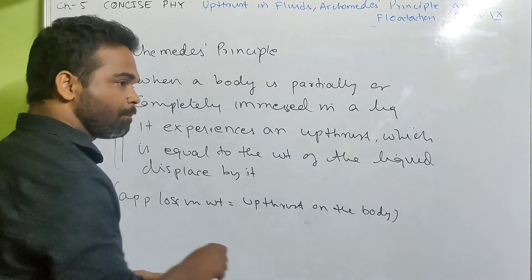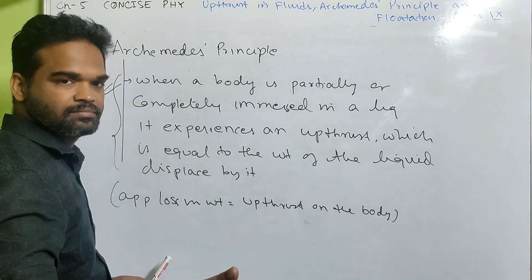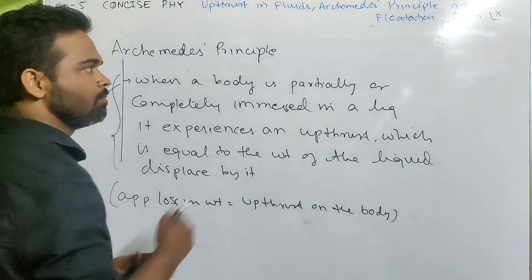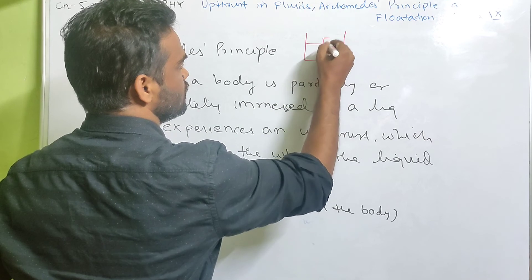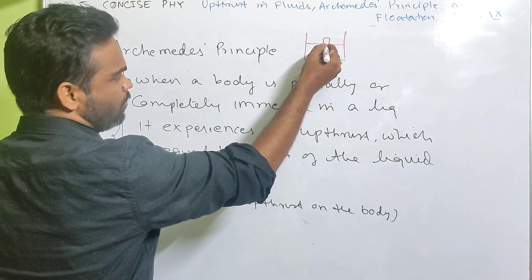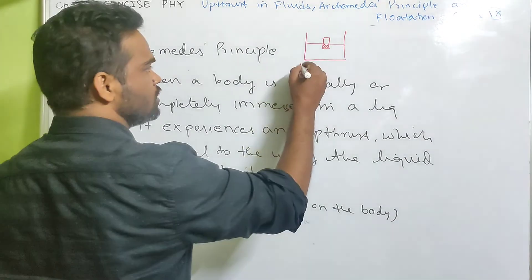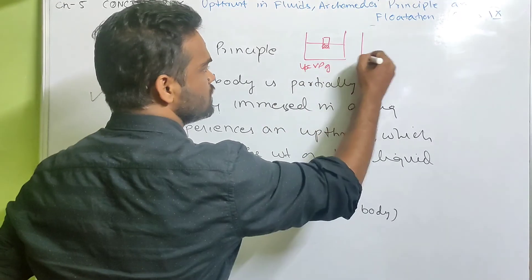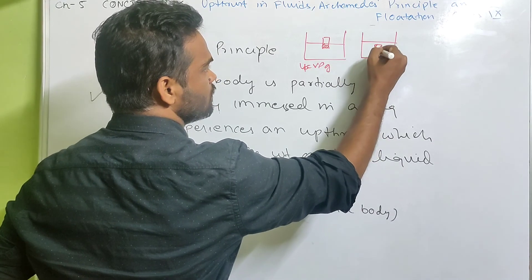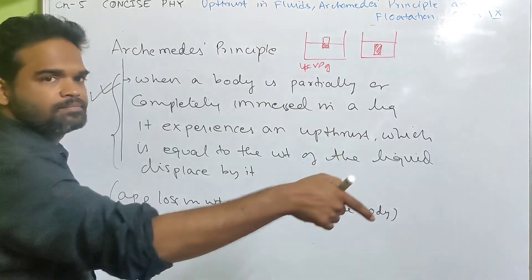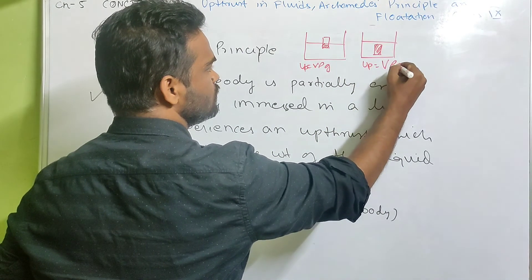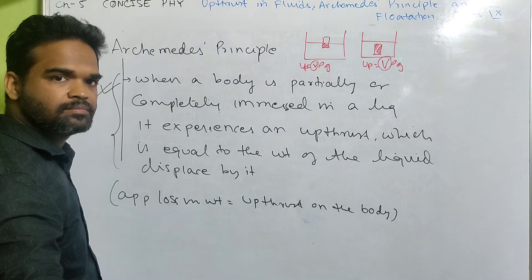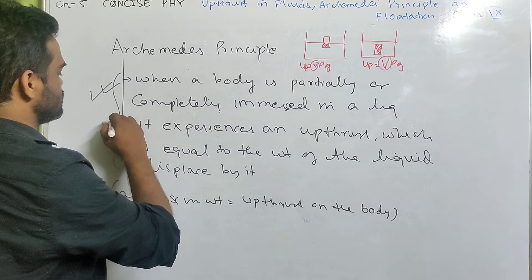Remember, when a body is completely immersed in water, it displaces the maximum volume, which means the maximum uptrust occurs when the body is completely immersed. Uptrust is V·rho·G. When the body is completely immersed, it displaces a larger volume - capital V is greater than small v - so in this case uptrust is maximum. This was your Archimedes' principle.